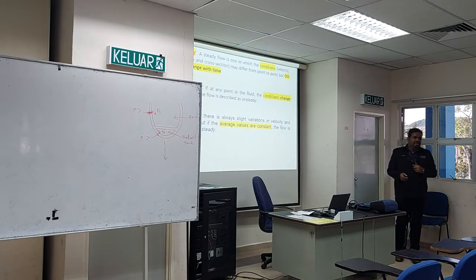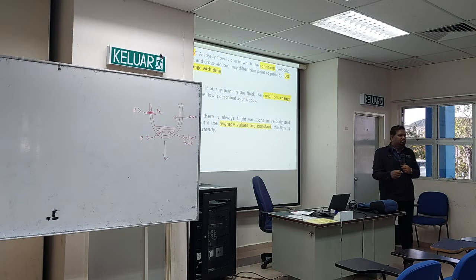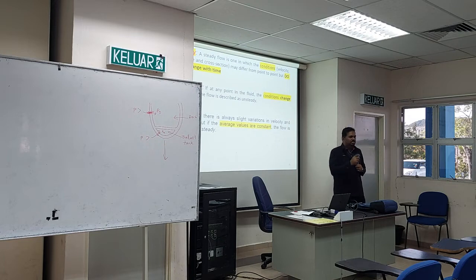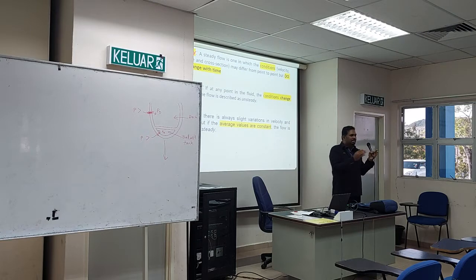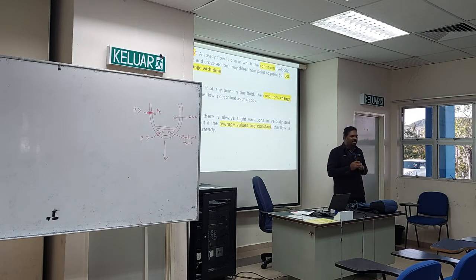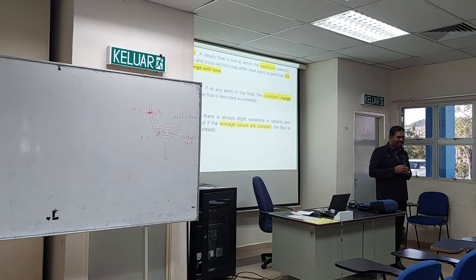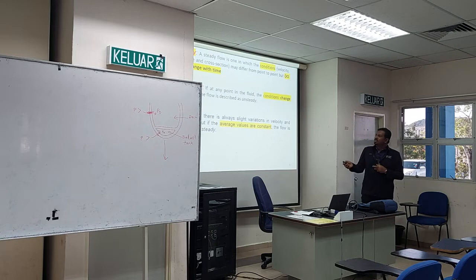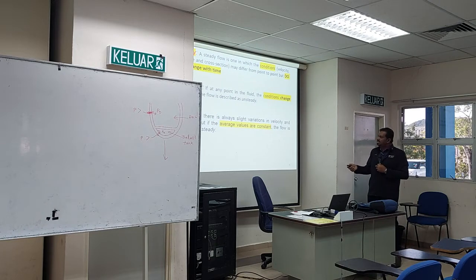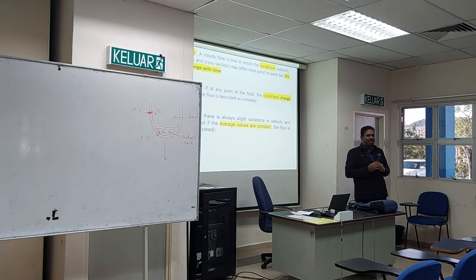Steady flow is different from uniform flow — steady is measured over time. If over a period of 5 seconds the flow doesn't change, we call it steady. If it changes over time, it's unsteady. Like a person who is 'steady' — their character doesn't change over time. Non-steady means changing over time.